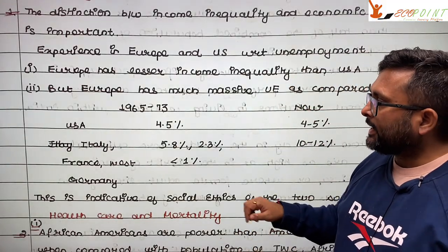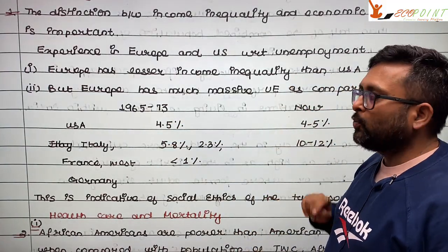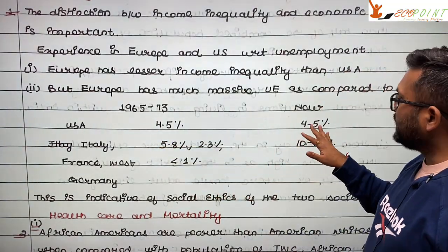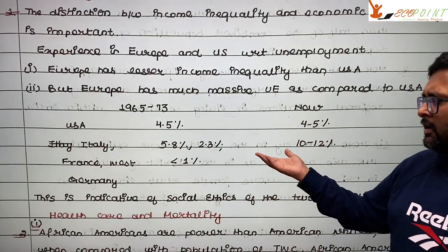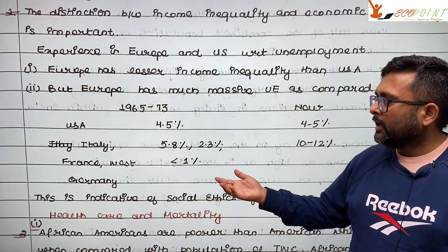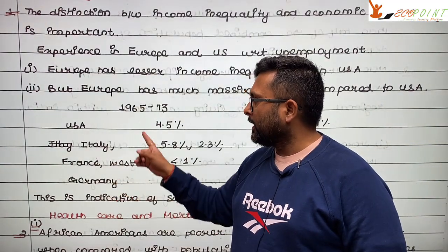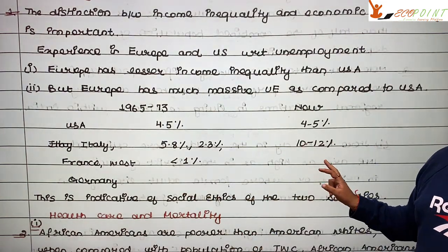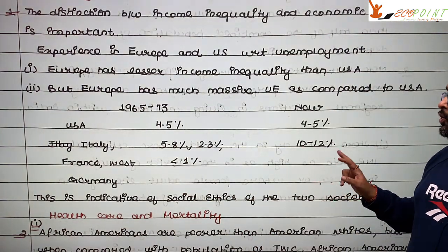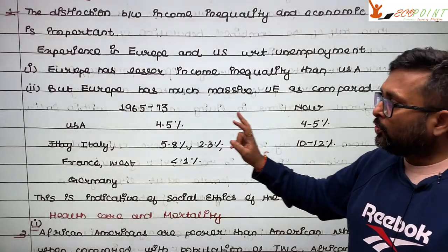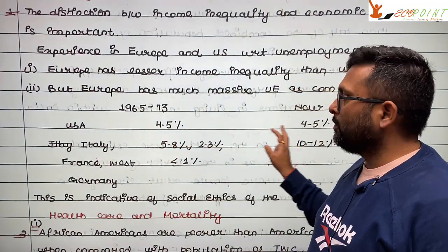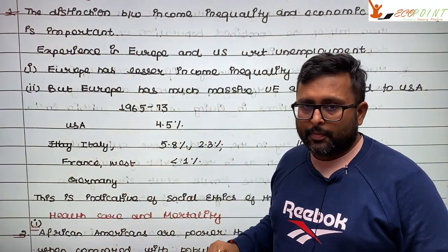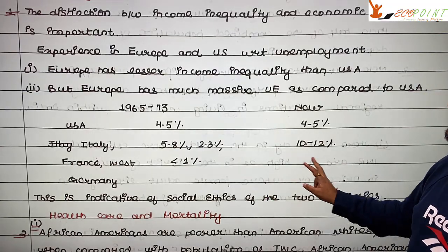If you look at 1965 to 1973 versus today: in the US, unemployment was 4.5% then and is still around 4–5% now. But in Italy, France, Belgium, and Germany, unemployment was 5.8%, 2.3%, and less than 1% respectively back then, and now it has risen to 10–12%. So in Europe, unemployment rates have risen a lot.